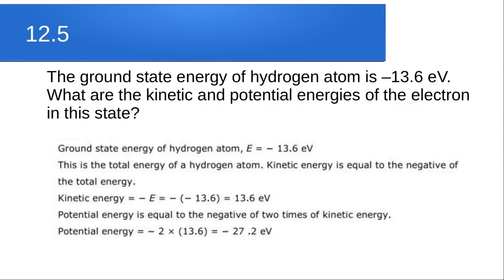The total energy of a hydrogen atom equals kinetic energy plus potential energy. The kinetic energy equals the negative of the total energy, so KE = −E = 13.6 eV. The potential energy equals negative two times the kinetic energy — this is because the potential energy accounts for the atom's stability plus energy from the electron being bound tightly to the nucleus. So PE = −2 × 13.6 = −27.2 eV.